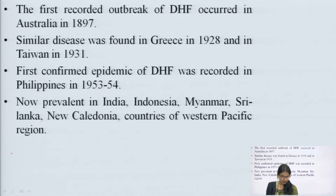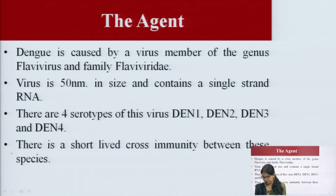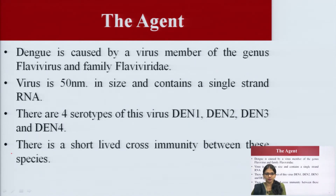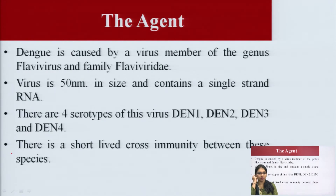Dengue is prevalent in India, Indonesia, Myanmar, Sri Lanka, and other countries of the West Pacific region. Dengue is caused by a virus of the genus Flavivirus, belonging to the family Flaviviridae. The virus is 15 nanometers in size and contains single-strand RNA. There are 4 serotypes: Den 1, Den 2, Den 3, and Den 4, with short-lived cross-immunity between these serotypes.